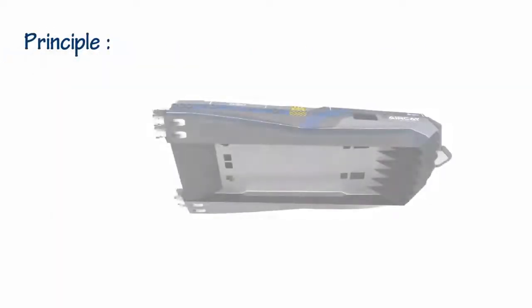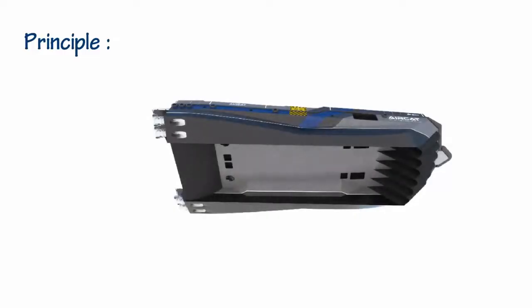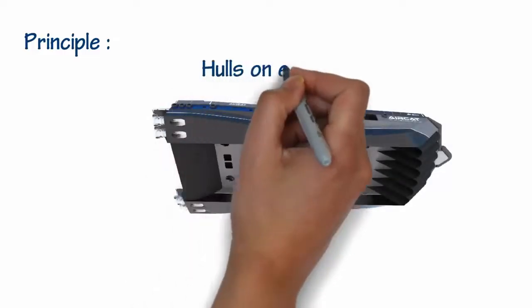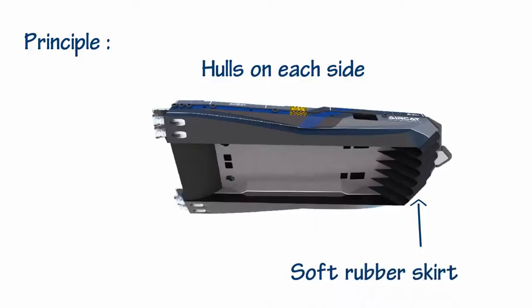Air is projected between the two hulls of a catamaran. This air forms an air cushion surrounded by the hulls on each side, a soft rubber skirt at the bow, and an inflatable bag at the stern.